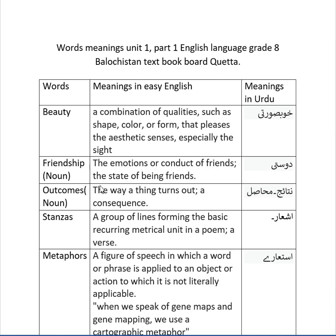Outcomes, which is a noun: the way a thing turns out, a consequence. In Urdu it is known as nataij or hasil. Stanzas: a group of lines forming the basic recurring metrical unit in a poem. In Urdu it is ashaar.